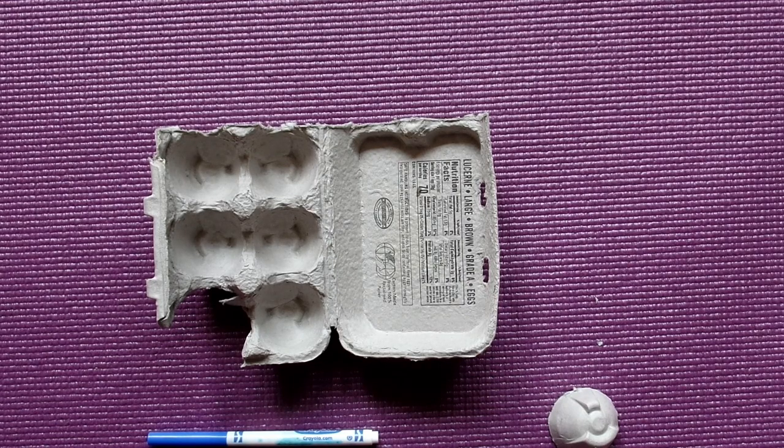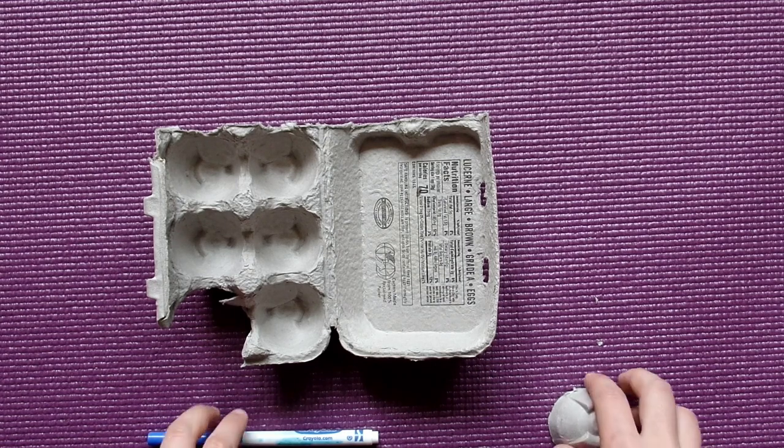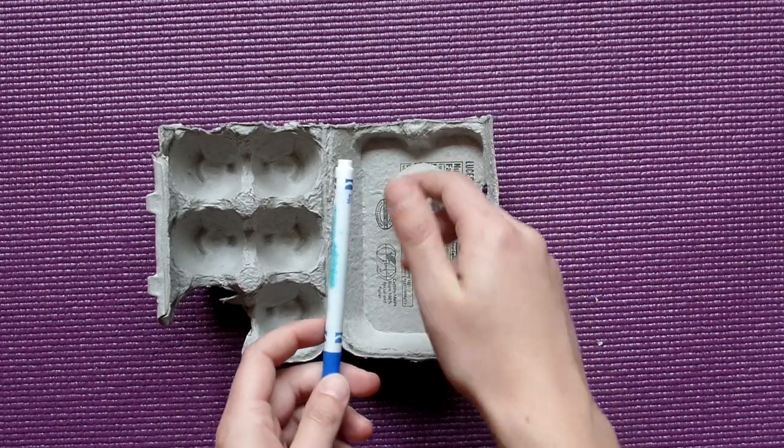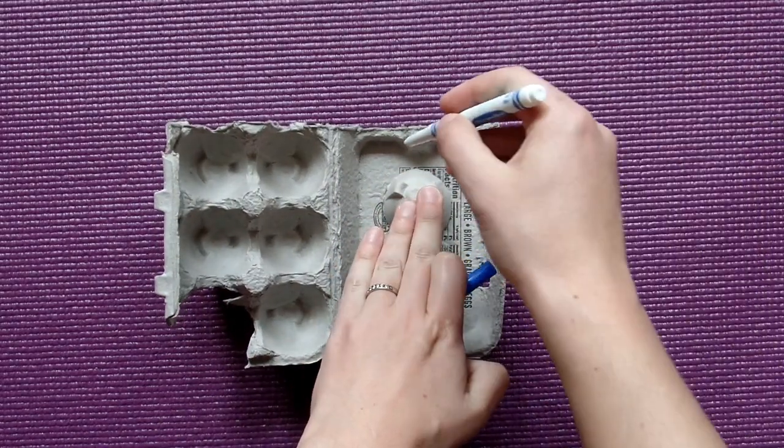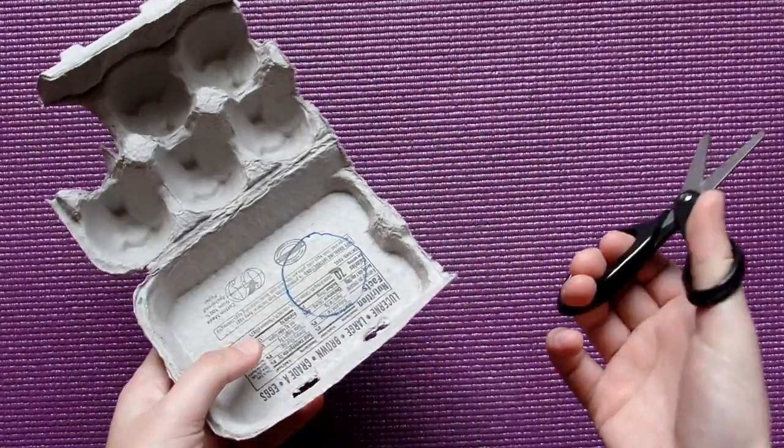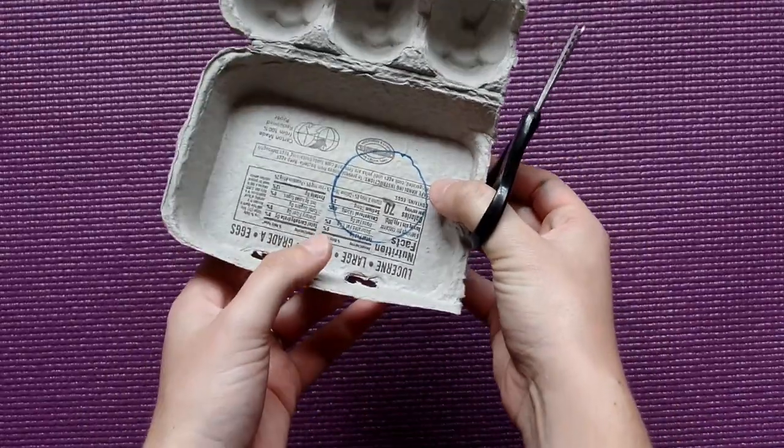Next we're going to make the bottom of the turtle shell called the plastron. So I'm just gonna take my carapace and a marker and I'm just gonna trace around that carapace so I get a nice circle that's the same size. Now I'll just use my scissors to cut out that circle.